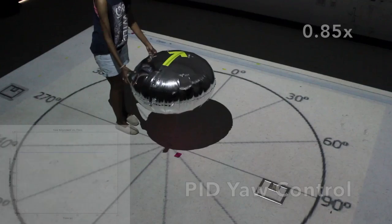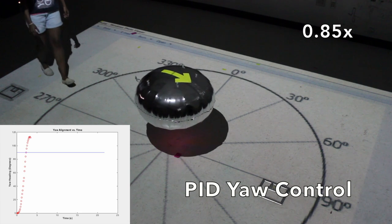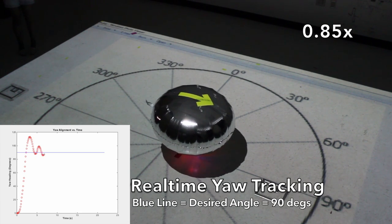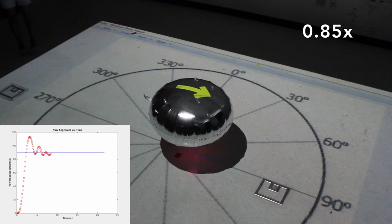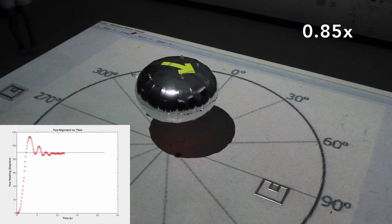After the blimp was fully built, controlling its motion was the next step. Using system identification, a mathematical model of the blimp's heading angle, or yaw, was created. From there, a PID controller was implemented to control the yaw. In this demo, we can see that the blimp maintained a desired reference angle of 90 degrees.